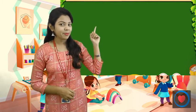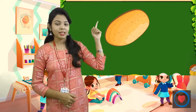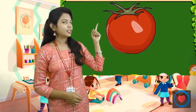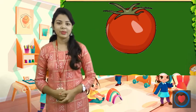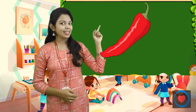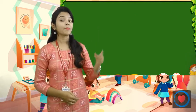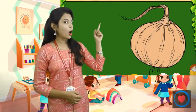The first vegetable is potato. Next is tomato. Next is chili. Next is cauliflower. Next is onion.